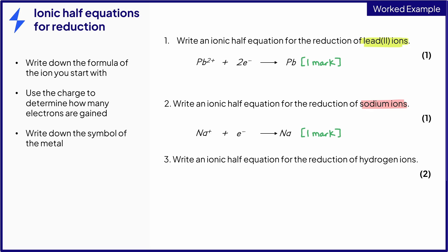The last example is slightly different, as this time you are writing the equation for the reduction of hydrogen ions, a non-metal ion. Hydrogen ions would be discharged at the cathode if the electrolysis involved an aqueous solution. Hydrogen atoms have 1 electron in their shell, so form ions with a single positive charge. We know it will gain electrons because it's a reduction reaction, and the product formed will be hydrogen gas, which has the formula H₂. This equation will score you 1 mark, because as you can see, it is unbalanced.